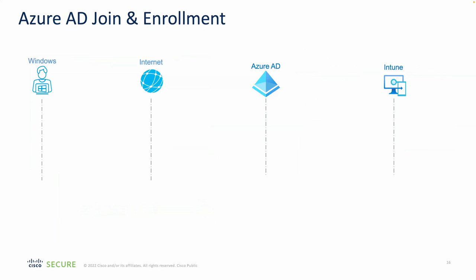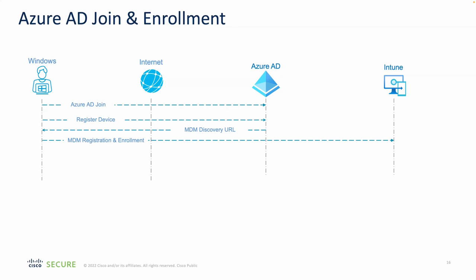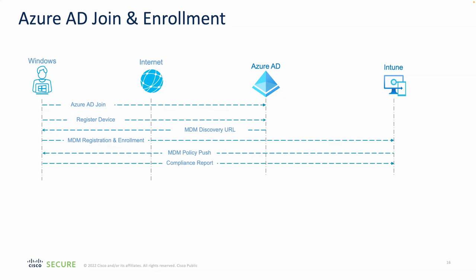The Azure AD join and enrollment flow: a Windows computer logs in and registers or joins Azure AD, which registers the device. Azure AD then pushes the MDM enrollment or discovery URL, and the endpoint registers and enrolls with Intune. Intune pushes the MDM policy, and the device returns a compliance report. That's how Intune determines if the device is compliant or not.